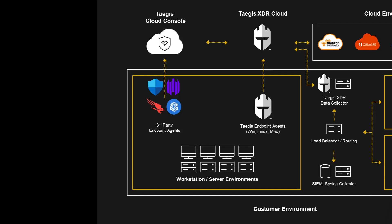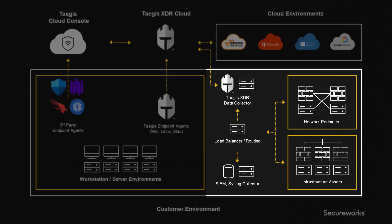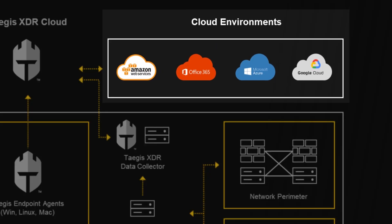SecureWorks MDR customers deploying at least 40% of licensed users can proceed to steady state. We also ingest telemetry from your traditional security devices like firewalls, web application firewalls, and IDS/IPS devices like SecureWorks iSensor located in your data centers. We provide a virtual device called a data collector that you install in your network to act as a log forwarder to the Arteges platform. The same virtual data collector can also be installed in your Amazon AWS, Microsoft Azure, and Google Cloud Platform environments.